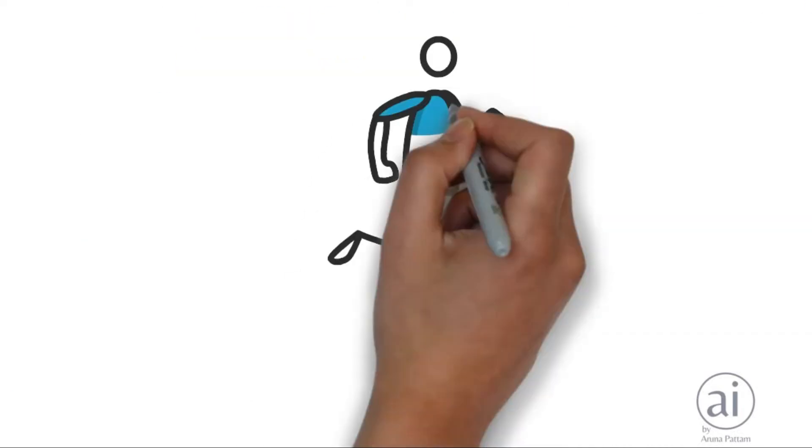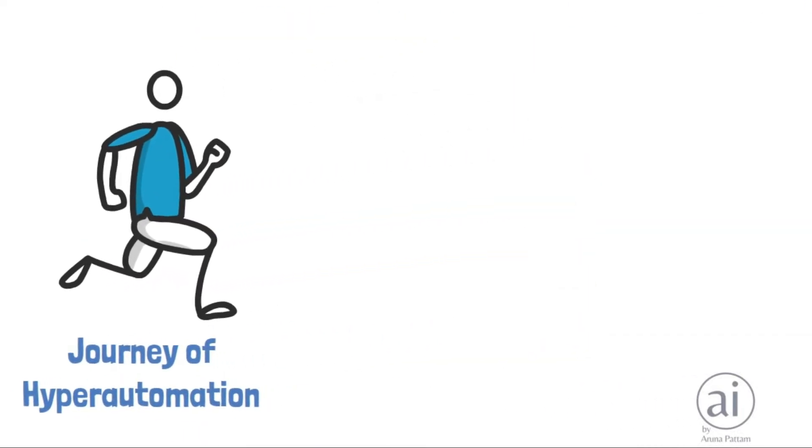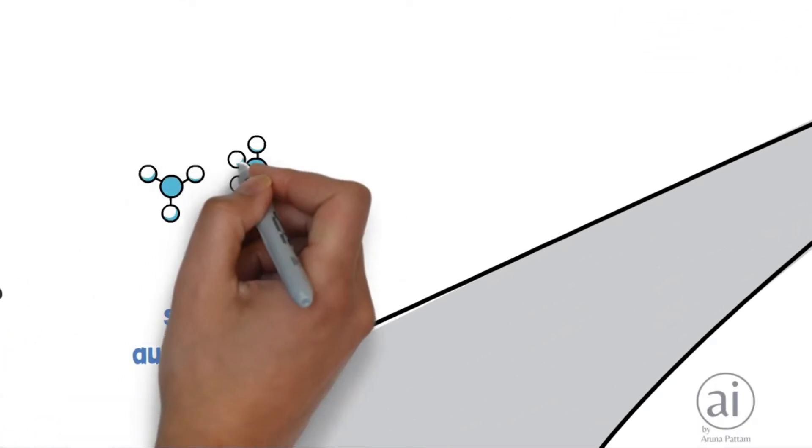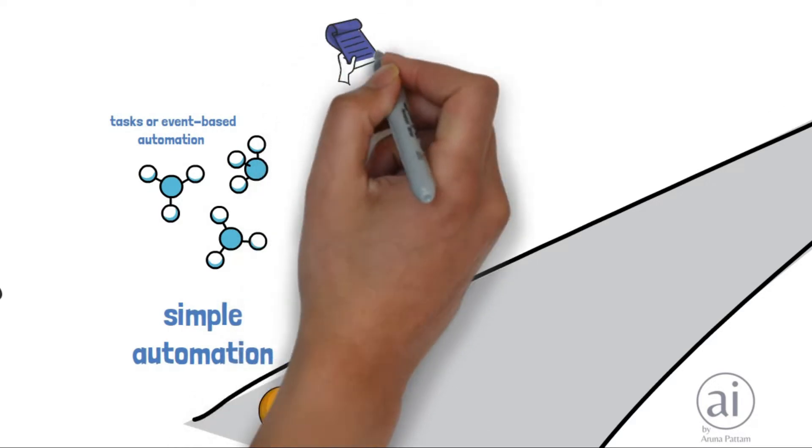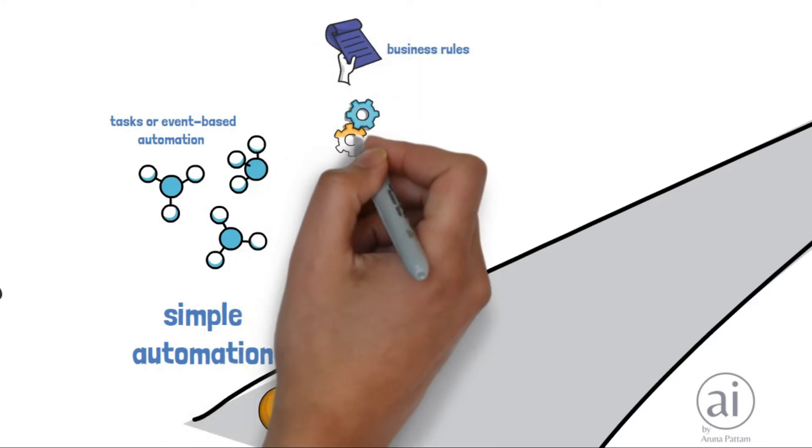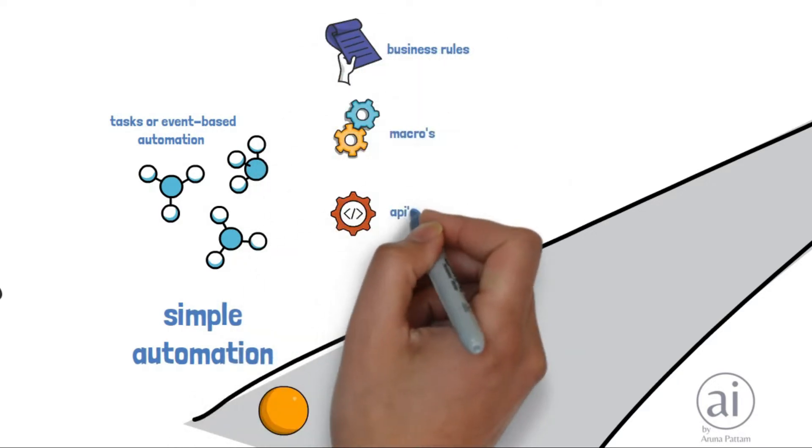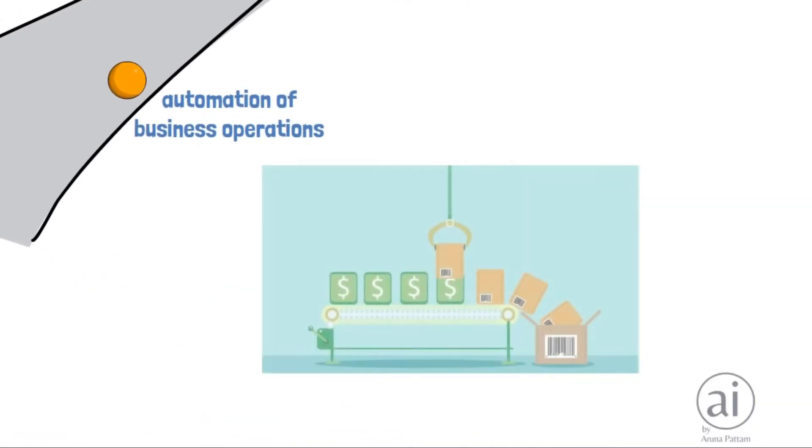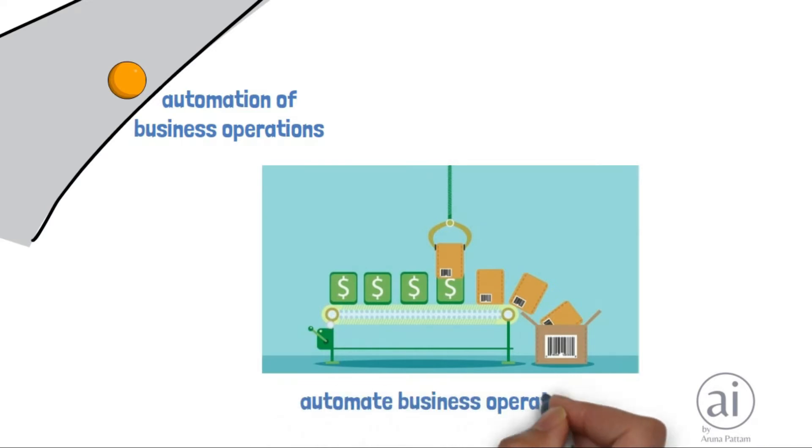Journey of hyper-automation. It started off with simple automation, which was tasks or event-based automation. This consisted of using business rules, macros and APIs. Next, it evolved into automation of business operations, which aimed to automate business processes.